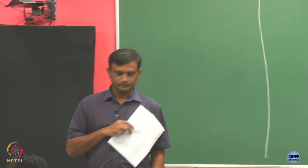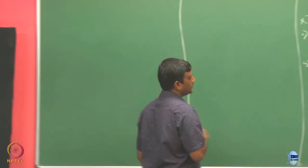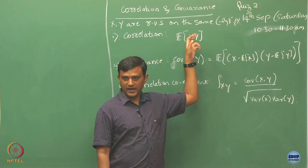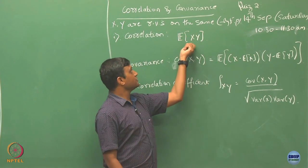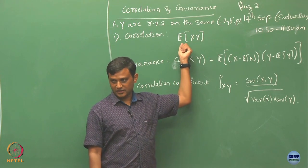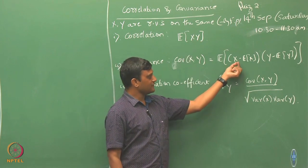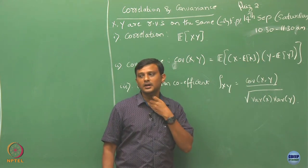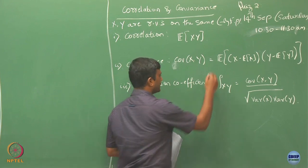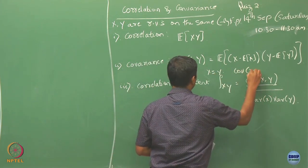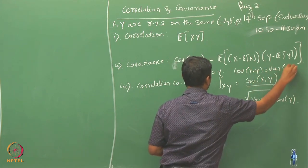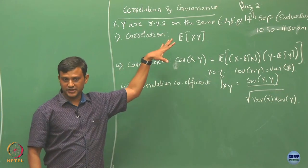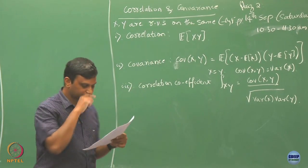Something that immediately comes to mind: suppose X is the same as Y, so Y is just X. Then the correlation is the expectation of X squared, which is the second moment. And in this case, the covariance of X and Y is nothing but the variance of X. So in a way, we are just generalizing these notions when we have multiple random variables.